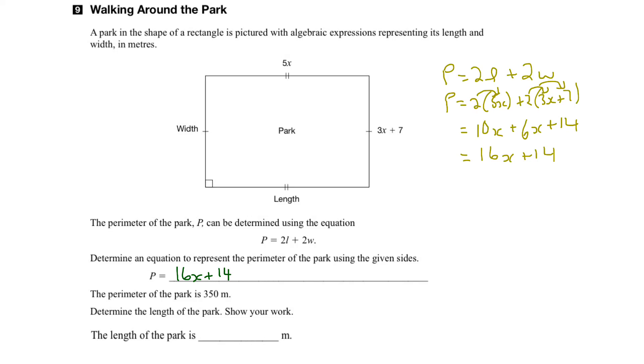Now we go to the next part. We're told that the perimeter is equal to 350 meters. Well, what we can do then is substitute 350 in for P. So what we would get would be 350 would equal this equation, 16x plus 14.